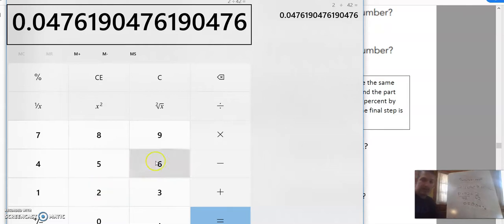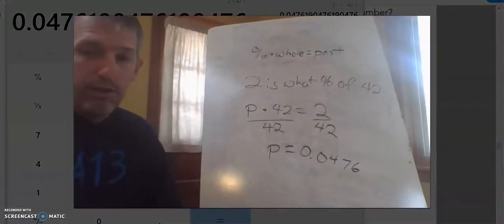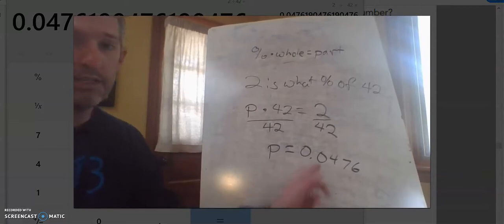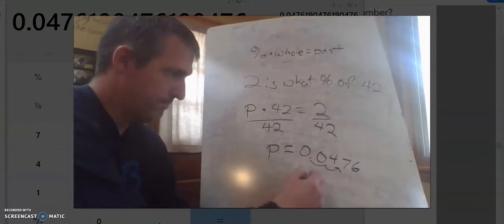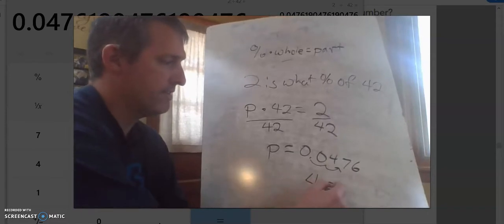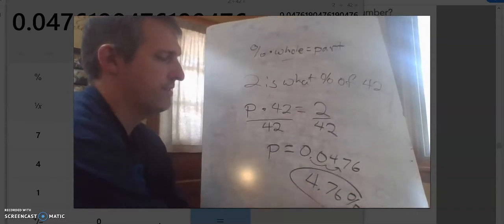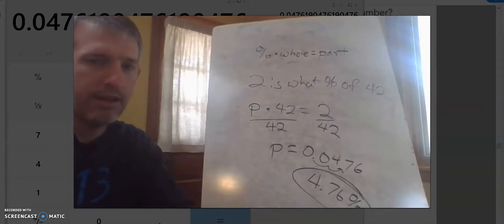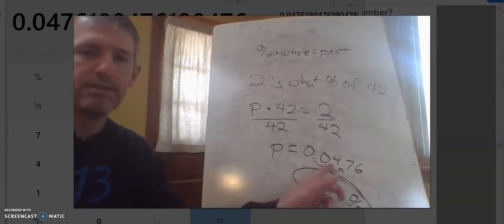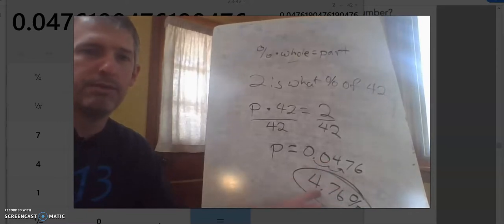And then I'm going to ask myself, if this is the decimal, I want to change this to a percent. So I'm going to move my decimal over two places, and I would get 4.76 percent. And that would be my answer. And then the trick we could do is we multiply this decimal by 100 and get our percent.